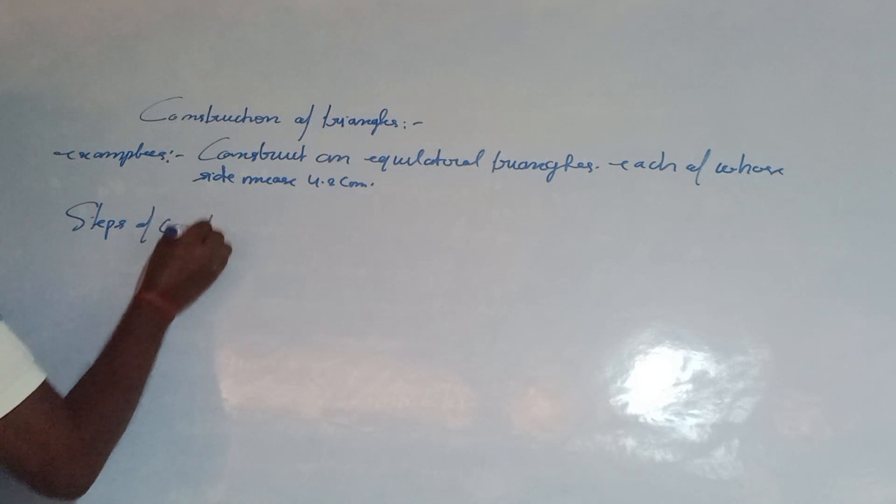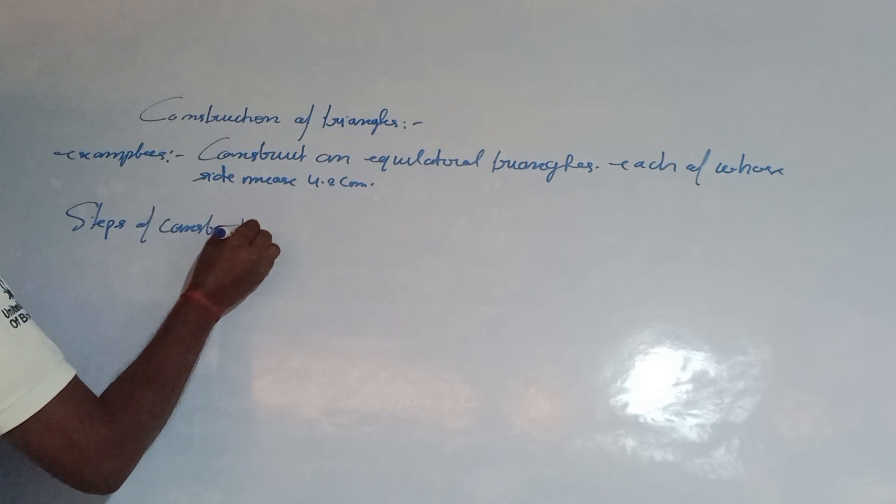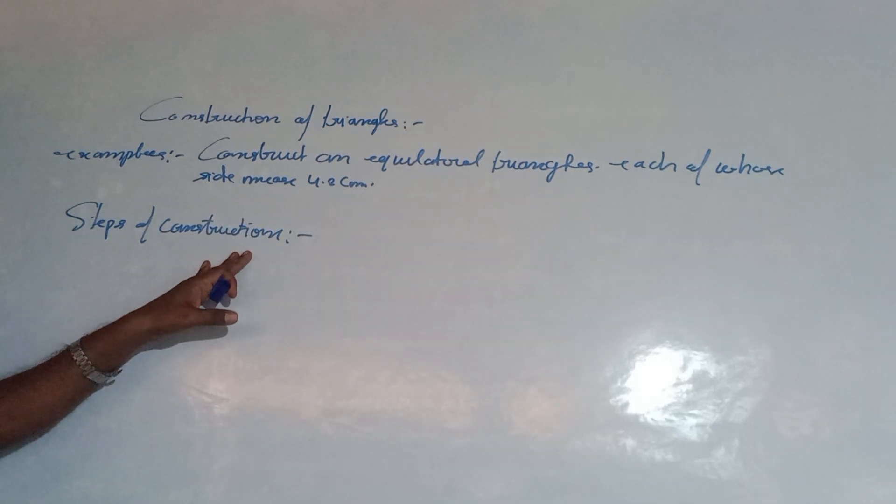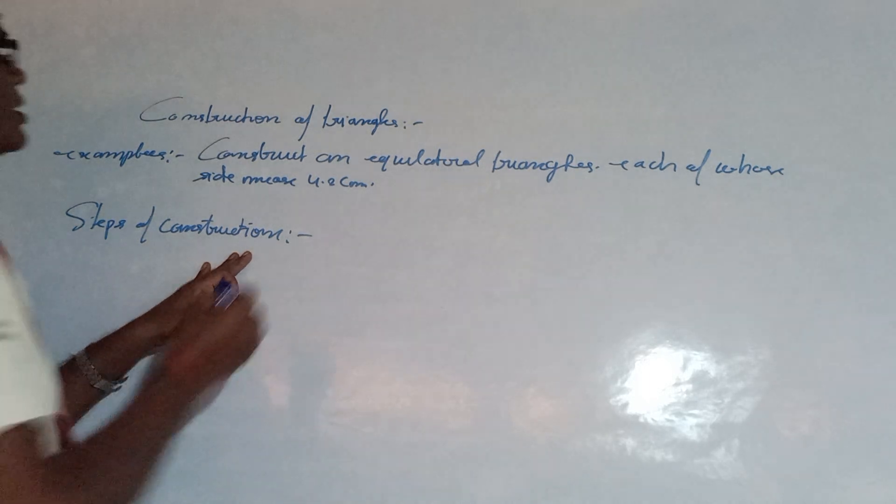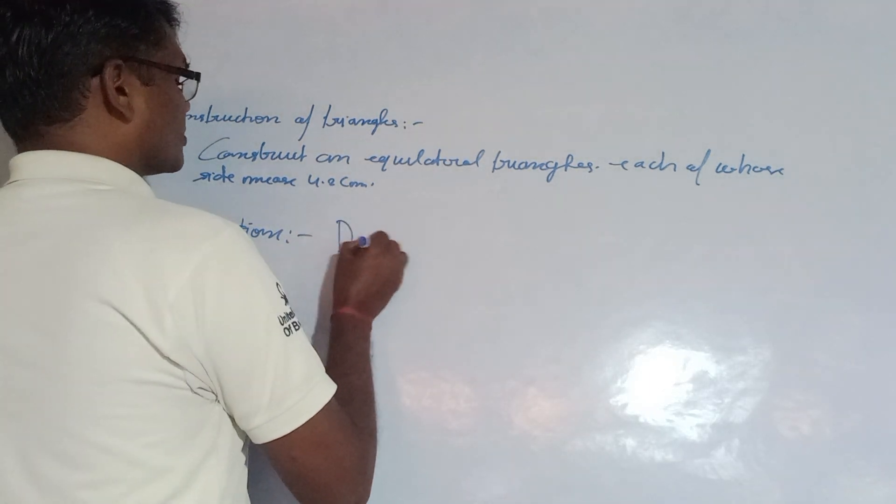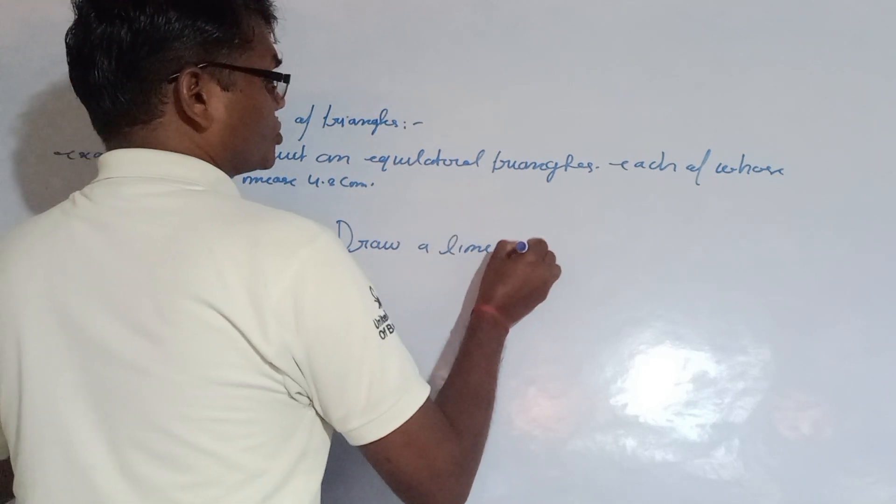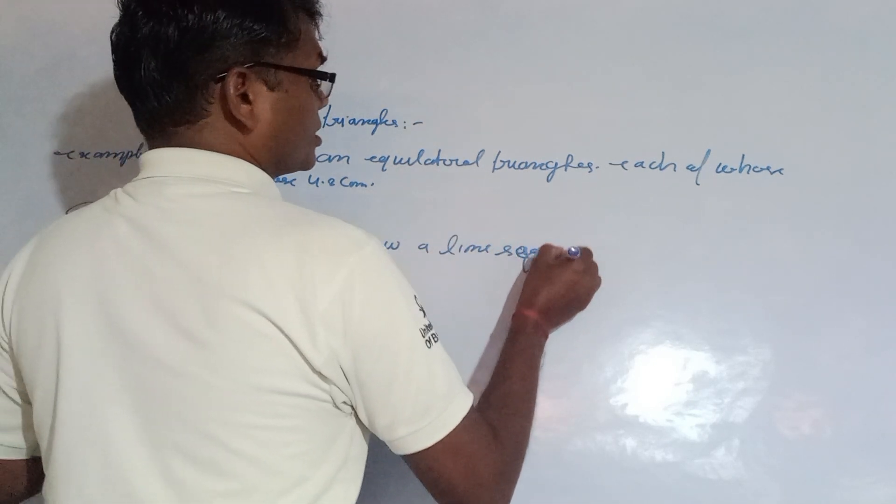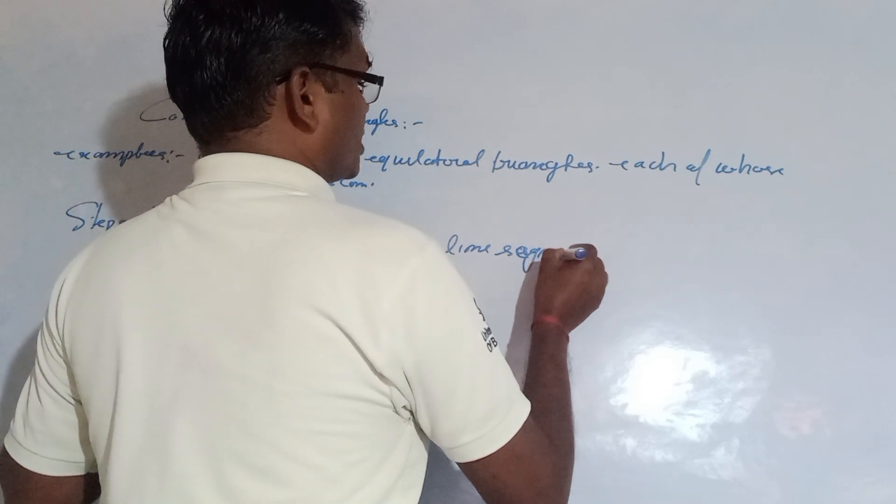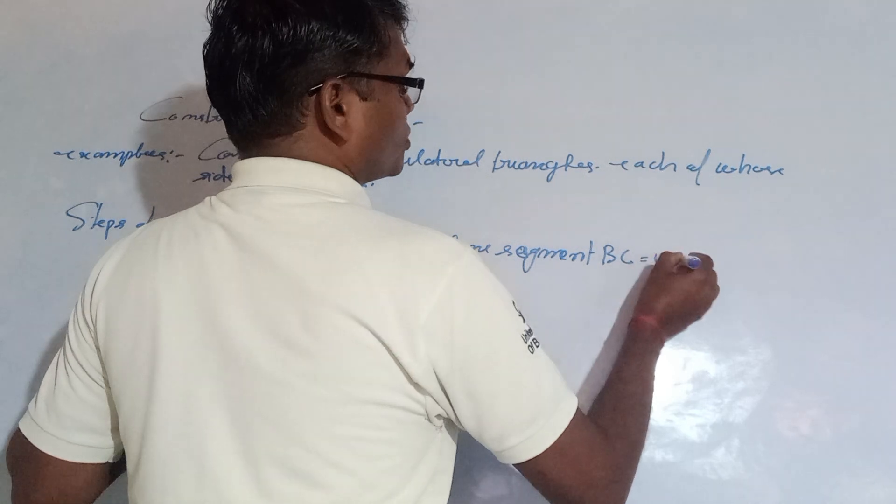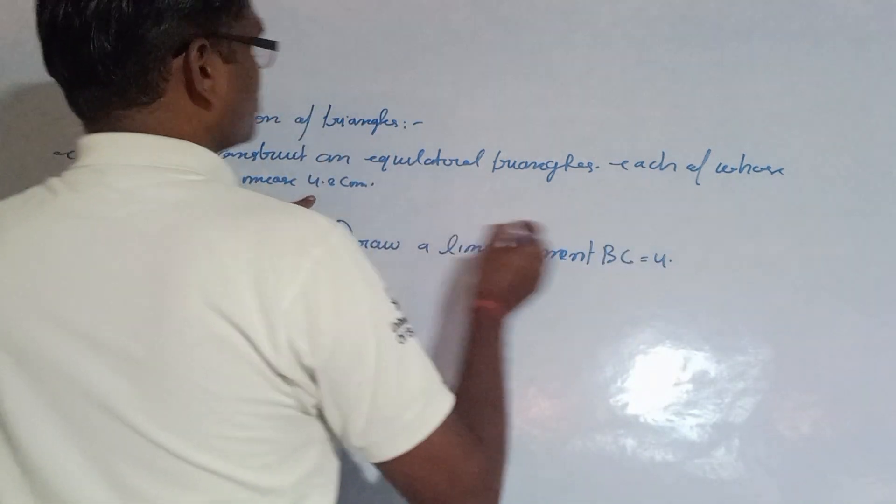Steps of construction - we will discuss the steps. First step: draw a line segment BC, 4.2 cm.